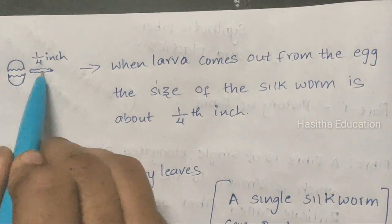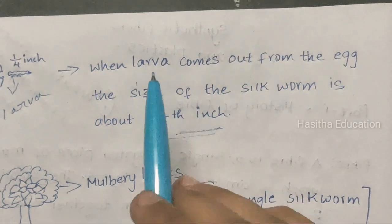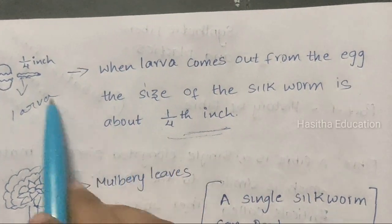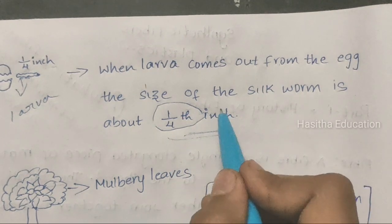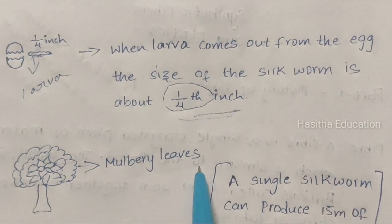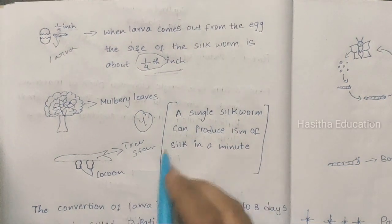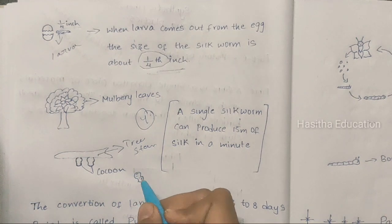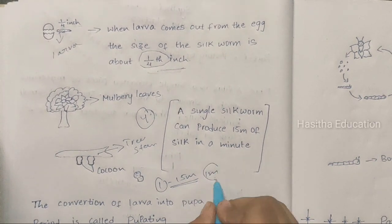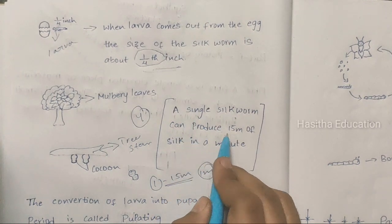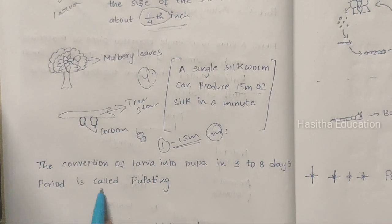After some days, the larva comes out from the egg. When it comes out, the size of the larva is 1/4th of an inch — this is an important point to remember. Once they come out from the egg, they are placed on huge mulberry trees. During some time, they shed their skin 4 times, then change color. The silkworm is then ready to weave the silk cocoon. A single silkworm can produce up to 15 meters of fiber in a minute. The process of conversion of larvae into pupa over a 3 to 8 day period is called pupating.